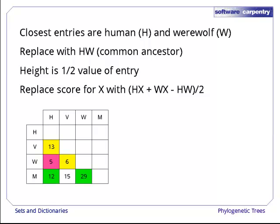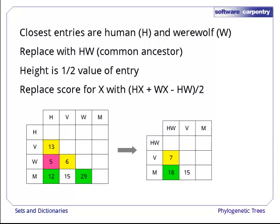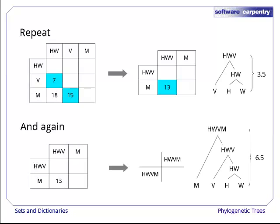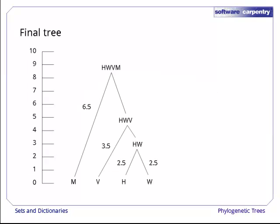For example, we will combine HV and VW, which are in yellow, and HM and MW, which are in green, which leaves us with this new matrix. The height of HW is half of the 5 we eliminated, or 2.5. Repeating this step, we combine HW and V, and finally HWV with M. Our final tree looks like this, and the missing heights are implied by the differences between branch values.